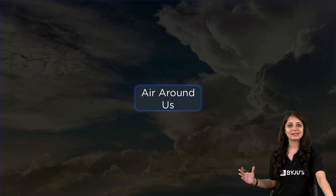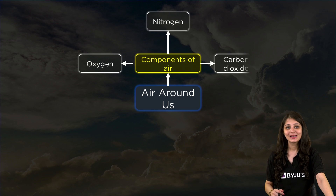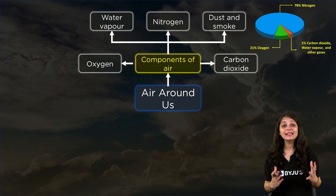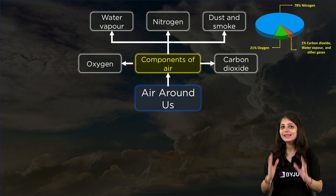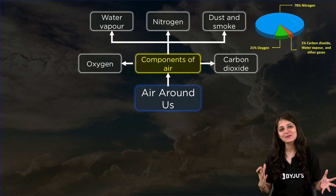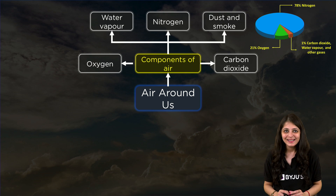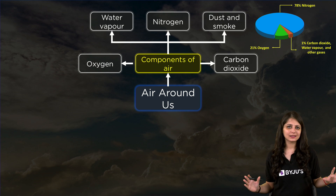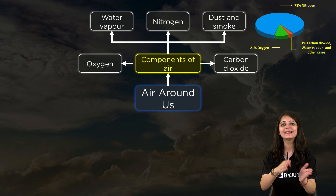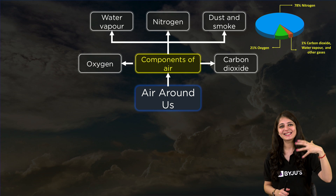Air Around Us. First, let's get to know about the composition of air. Air contains a number of gases that includes 78% nitrogen, 21% oxygen, and 1% other gases such as carbon dioxide, water vapor, etc., along with small amounts of dust and smoke as well. So let's talk about all of these one by one in the descending order of their availability.